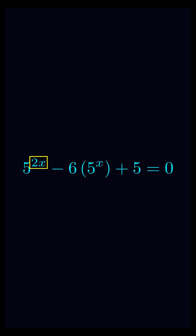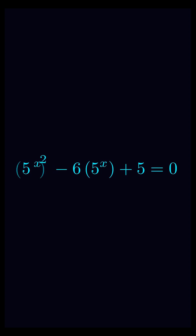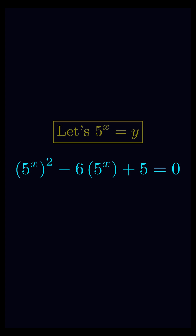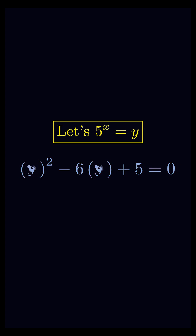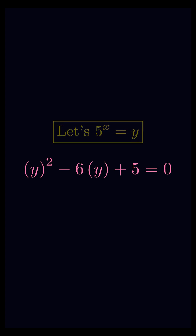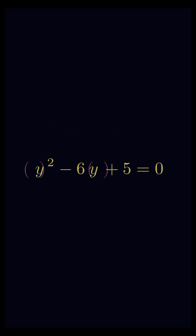First we will separate 2 from the power and it will become a whole square. Now we will let 5 power x equal y. We will substitute it in the equation so the equation will become.